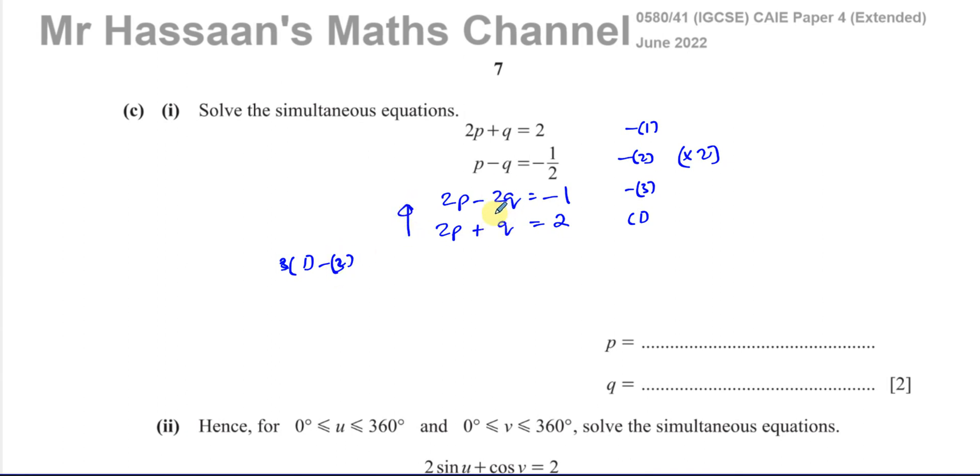q minus minus 2q is q plus 2q, and 2 minus minus 1. That gives 3q equals 3, so q equals 1.